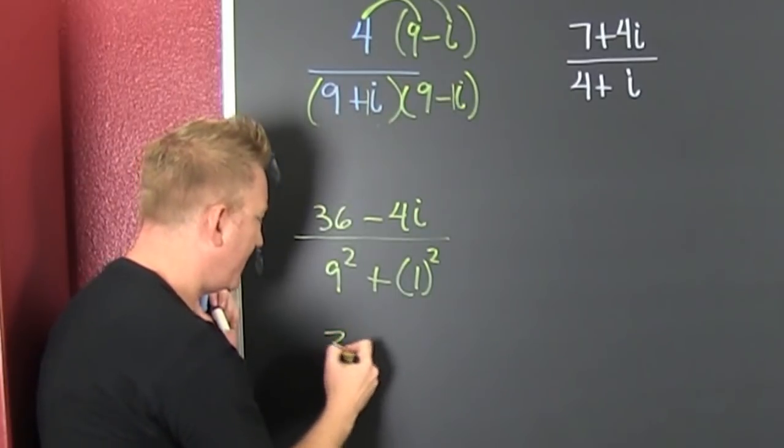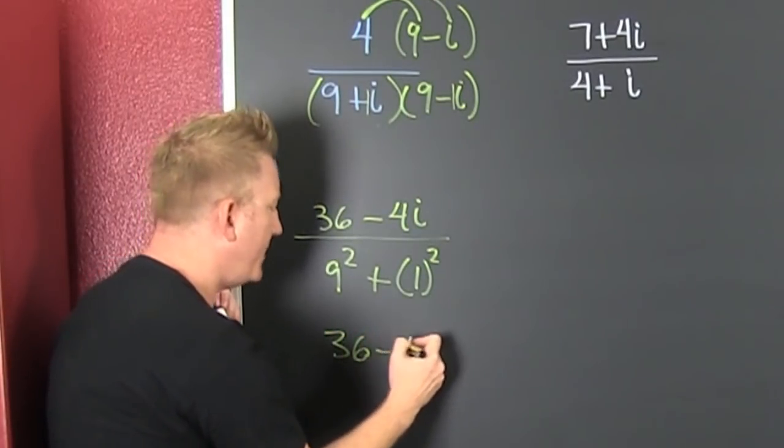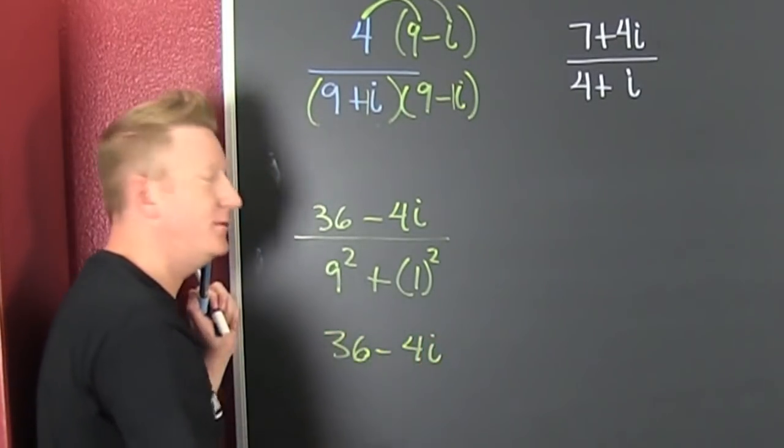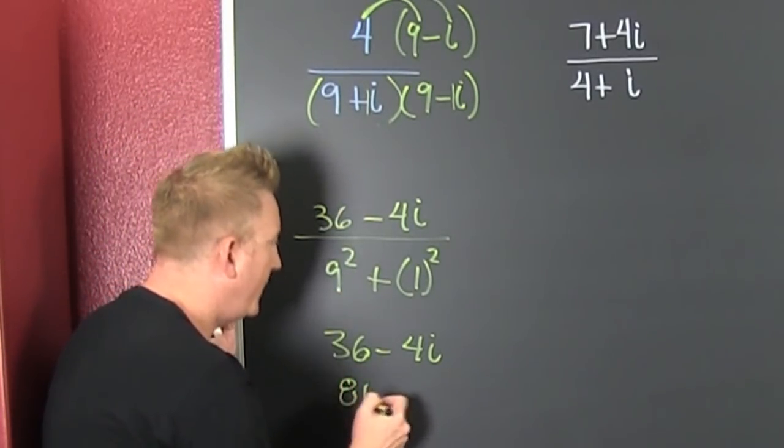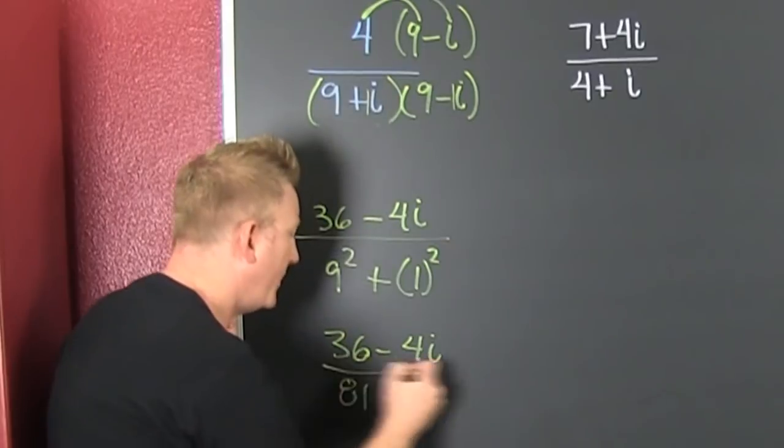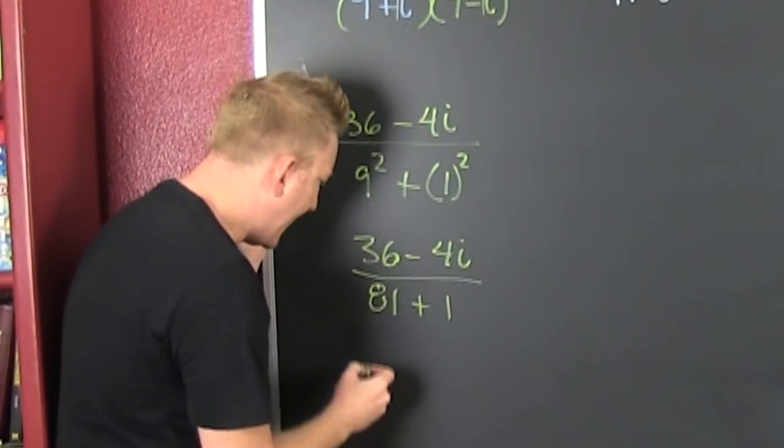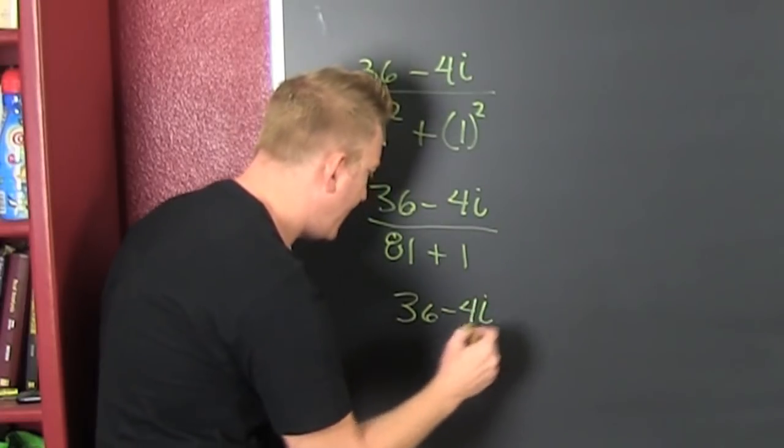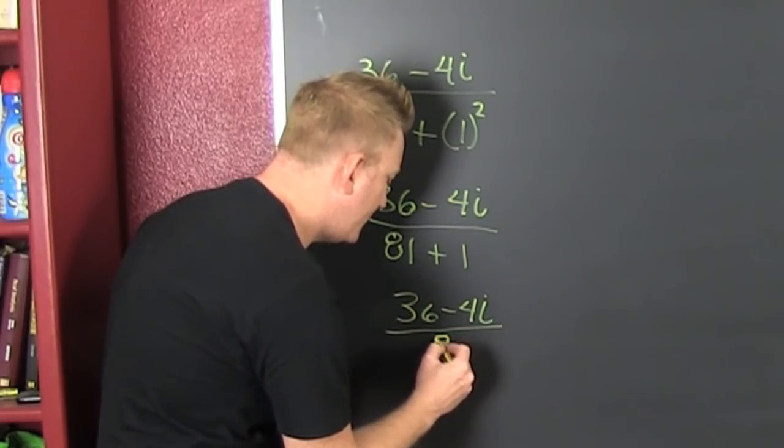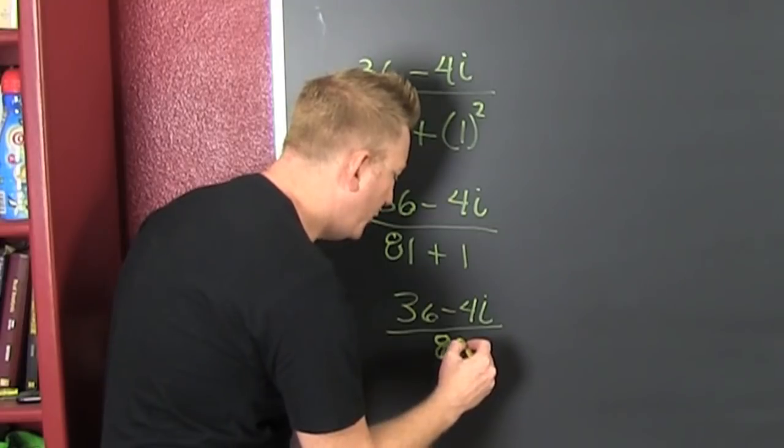So, in that numerator, that's a 36 minus 4i. Why'd you call me? So then that's 81 plus one. Fun. So what's that? That's 36 minus 4i divided by eighty-two.